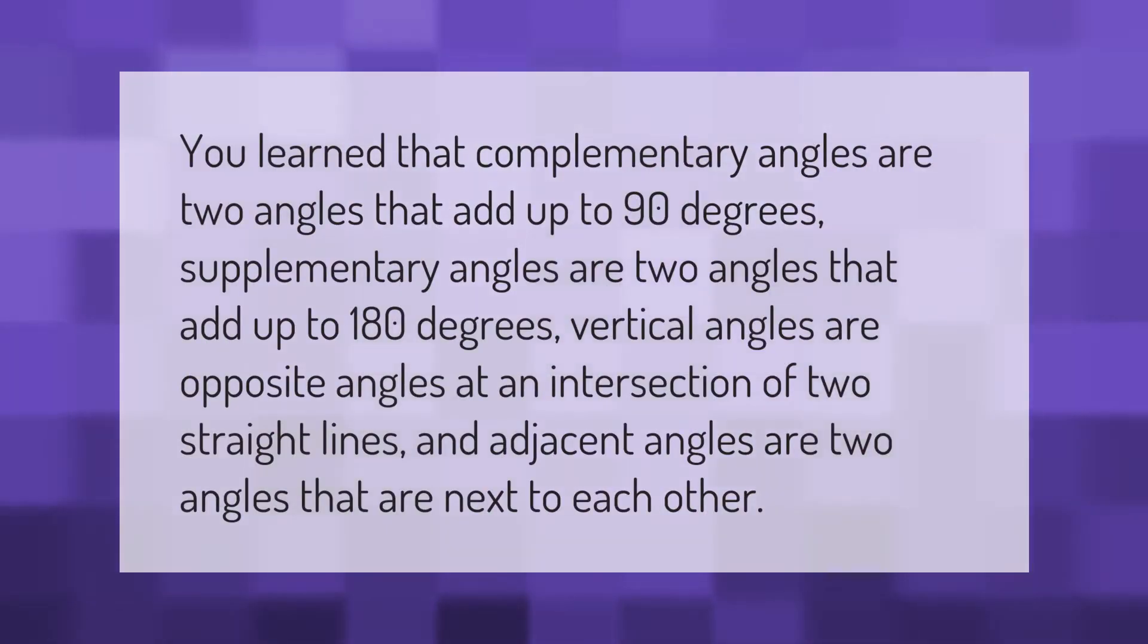You learned that complementary angles are two angles that add up to 90 degrees. Supplementary angles are two angles that add up to 180 degrees. Vertical angles are opposite angles at an intersection of two straight lines, and adjacent angles are two angles that are next to each other.